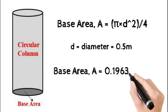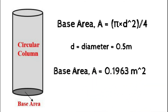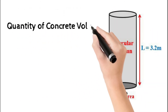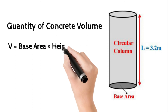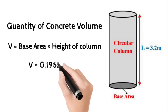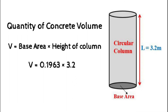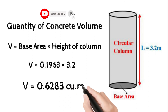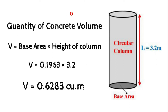Substituting the value, we get the base area as 0.1963 square meters. Then the quantity of concrete volume equals area multiplied by height: 0.1963 multiplied by 3.2, giving us a concrete volume of 0.6283 cubic meters. This means 0.6283 cubic meters of concrete is required for the given dimensions of the circular column.